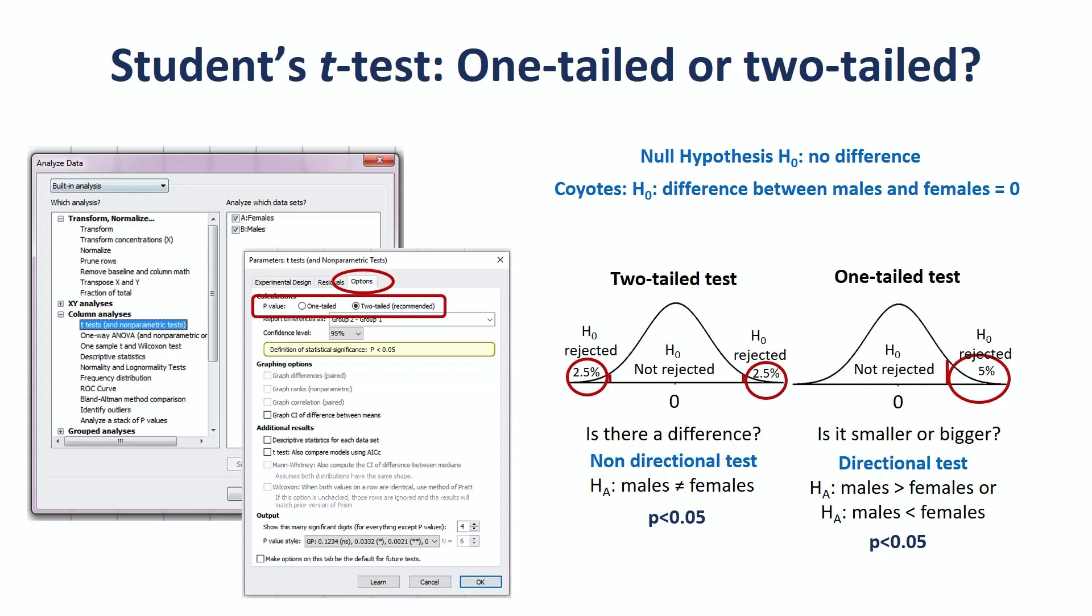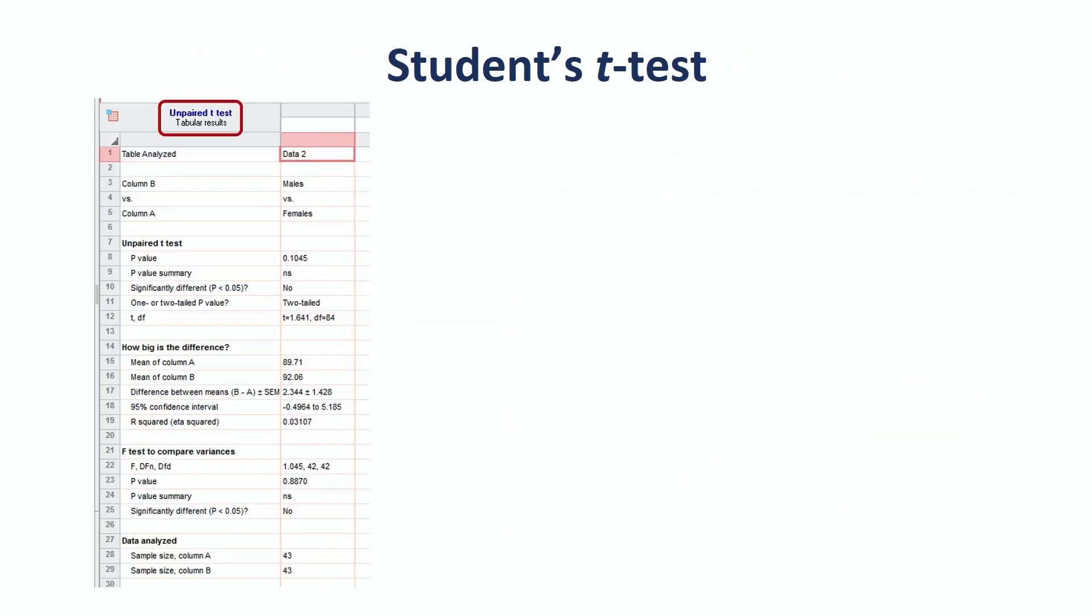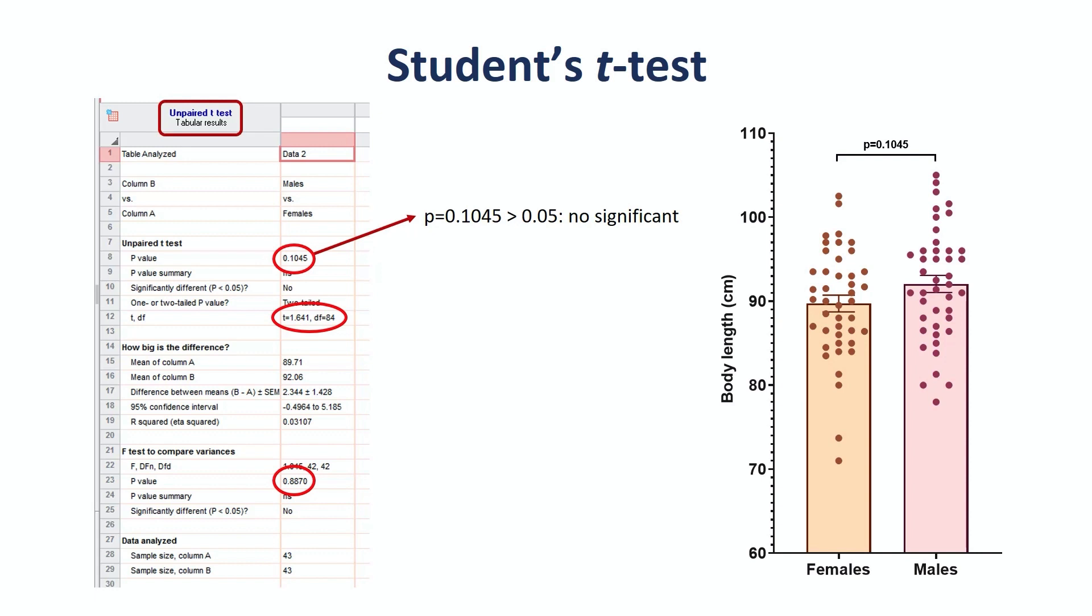Finally, the t-test at last. We get a p-value of 0.1045, so no significant difference here. Prism also gives us the t-value and the degrees of freedom. The f-test checks out the variances, and no surprise here, there is no significant difference in variability between the two groups. So, if males' coyotes are on average longer than females, the difference is not significant.